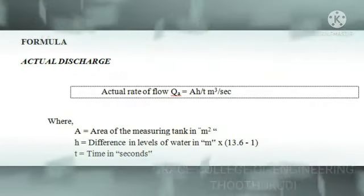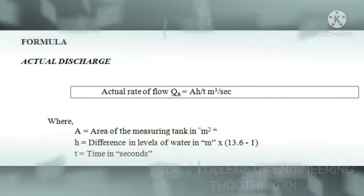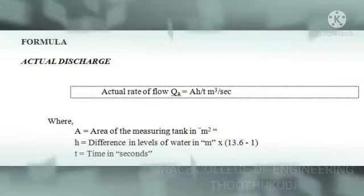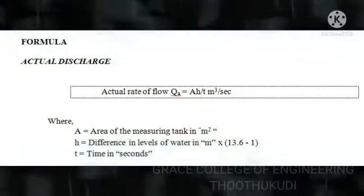Actual discharge can be calculated by this formula: Ah divided by t, where A is the area of the measuring tank in meter squared, h is the difference in levels of water in meter times (13.6 minus 1), and t is the time in seconds.